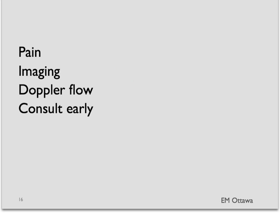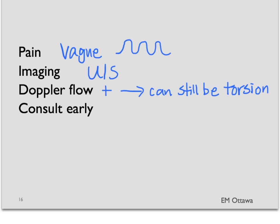In summary, in this segment, we discuss ovarian torsion. The main points are pain can be vague and intermittent. Ultrasound with Doppler flow is the diagnosis of choice. The presence of Doppler flow can still be ovarian torsion. If we have a high clinical suspicion, consult the gynecologist early. Thank you for watching.